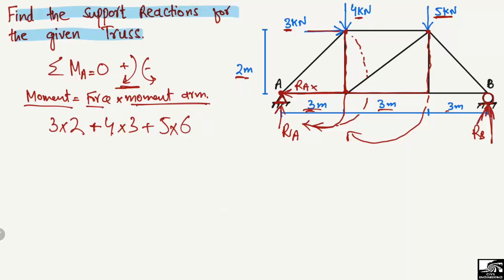The other force creating a moment about point A is the reaction RB, but this force creates a moment in the anticlockwise direction about point A. So it is negative: minus RB multiplied by 9 meters, which is the total perpendicular distance from point B to point A (3 plus 3 plus 3 meters). This whole expression equals zero.